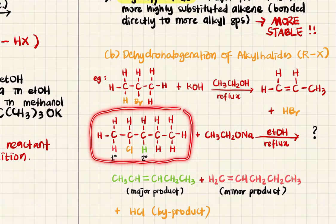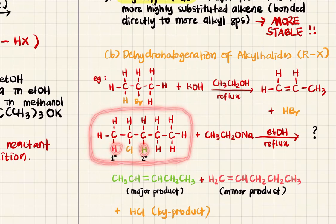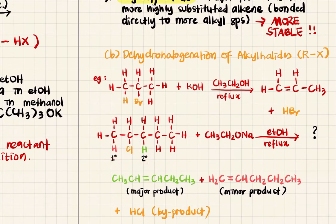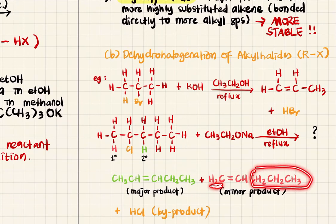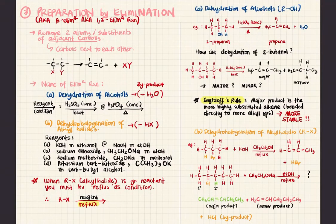Similarly, when you have two different hydrogens that can be removed — one is a primary hydrogen and the other is a secondary hydrogen — you get more than one possible product. We use Zaitsev's rule to determine the major product. The product where two alkyl groups are attached to the double bond carbon is the major product, while the one with only one alkyl group is the minor product. The byproduct is HCl. That covers the preparation of alkenes by elimination reactions.